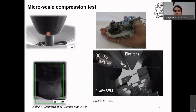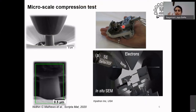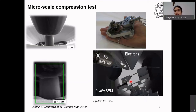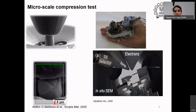All of these are at a very small length scale. The entire instrument fits into the palm of your hand and goes inside what is called a scanning electron microscope. You can watch what is happening even at the length scales — here the scale bar is 0.5 microns.